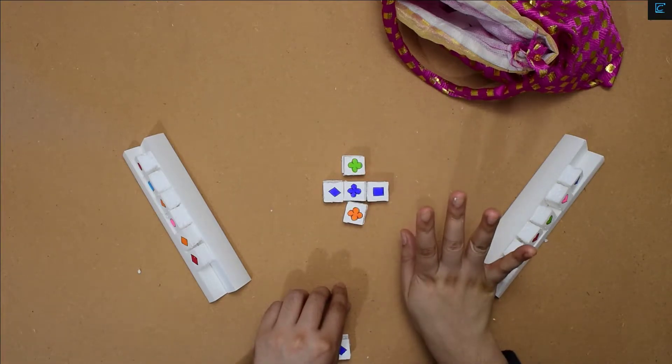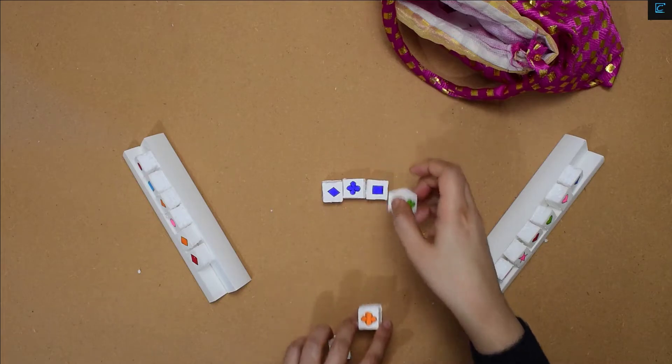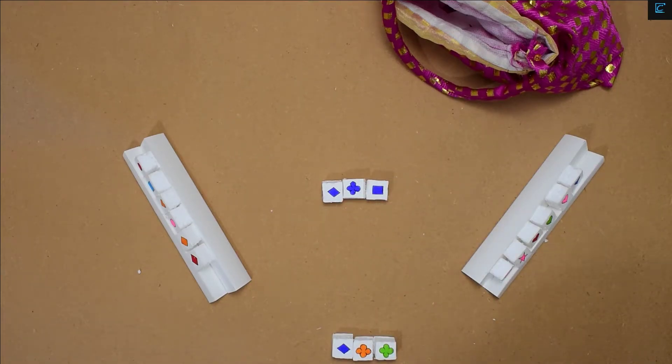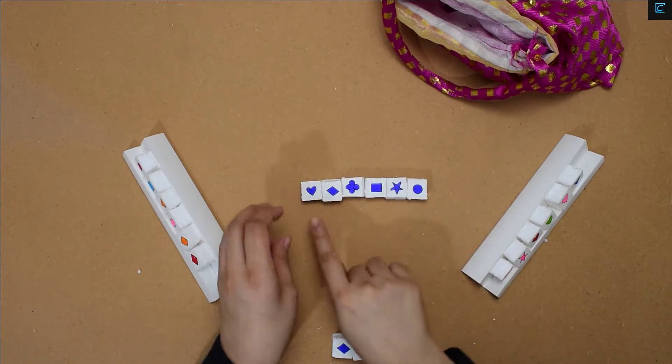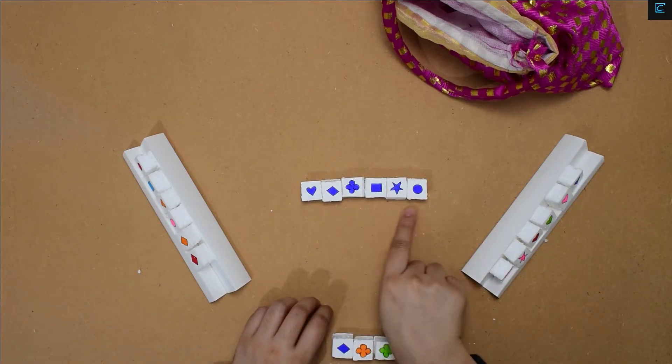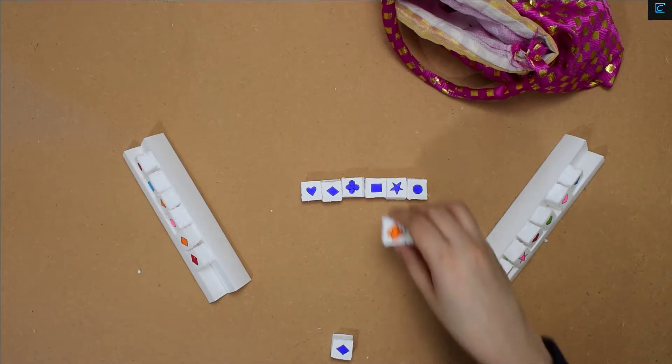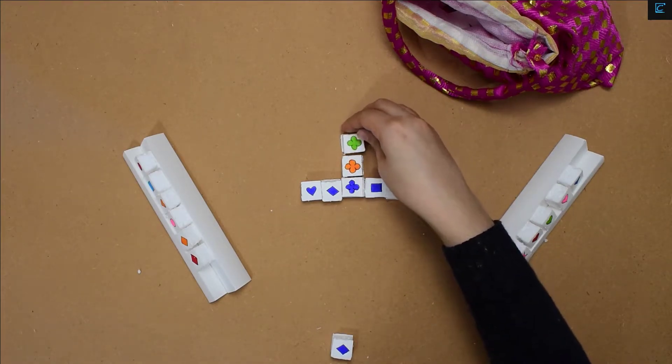Each line can be a maximum of six tiles since there are six different shapes and six different colors. I'm placing six different colors to show you.